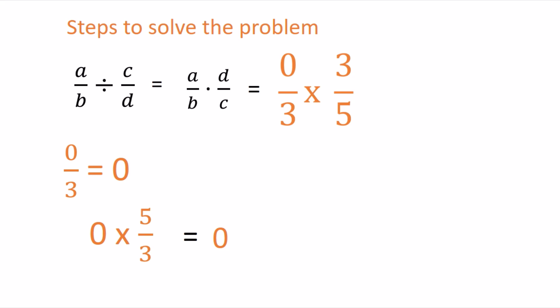So our new problem looks like this: it becomes 0 times 5/3. And we know the 0 is like 0/1. Even if you multiply 0 by 5, you get 0. And you multiply 3 by 1, you still get 3. But you have 0 divided by 3.